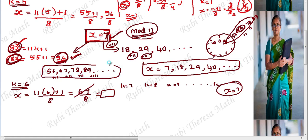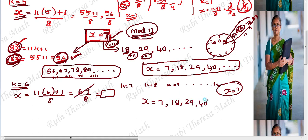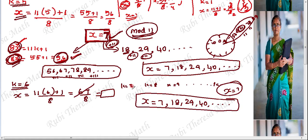This is the final answer. The x values are 7, 18, 29, 40, etc. Rather than substituting k values one by one for a long time, it is better to add plus 11 to the previous x value to find all solutions. Okay, thank you.